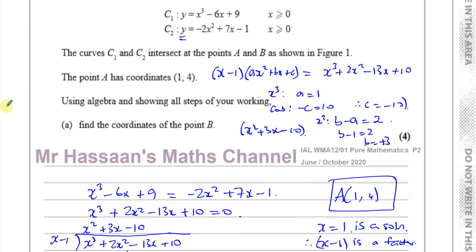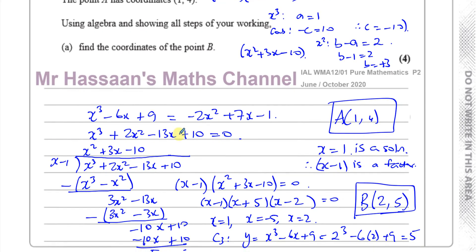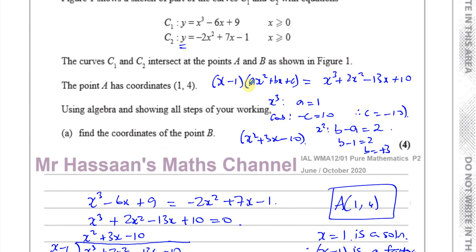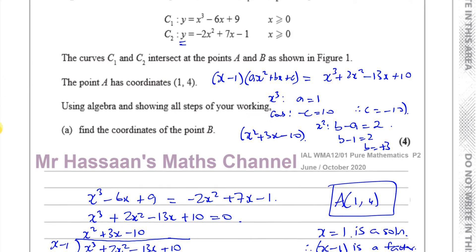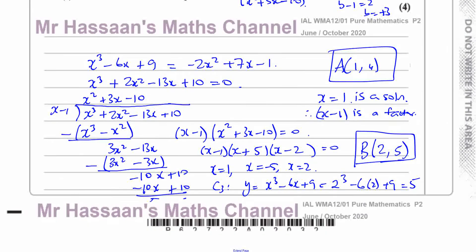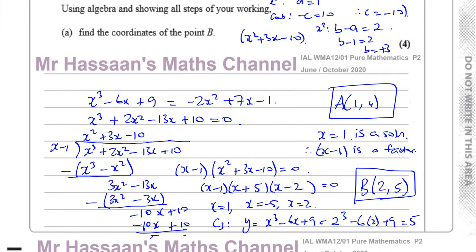So there are two ways to factorize once you know a factor: algebraic long division, and recognition by comparing coefficients of x cubed, x squared, and constant terms. Both give the same answer and complete part (a).